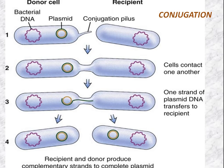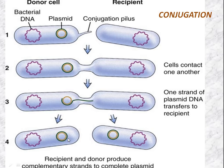During conjugation, two bacterial cells of the same or closely related species come together and are connected by sex pili. Through this pili, a cytoplasmic bridge is formed. The donor cell — typically the cell with the plasmid — transfers one strand of the plasmid through that cytoplasmic bridge to the recipient cell. After receiving that half of the DNA, replication occurs in both donor and recipient cells, making a complete plasmid in each. So both cells exchange genetic material, making this a type of sexual reproduction.